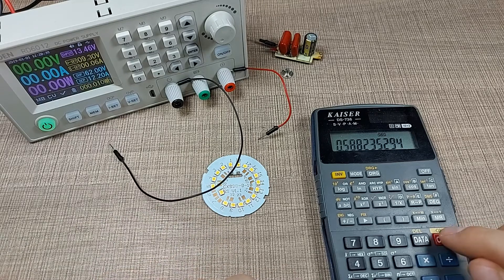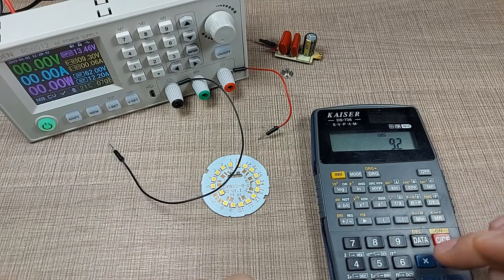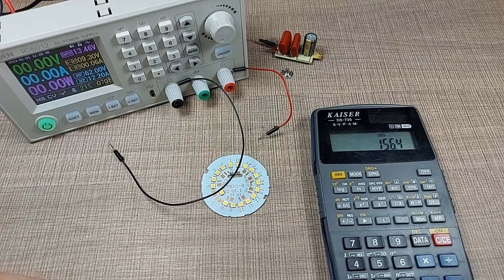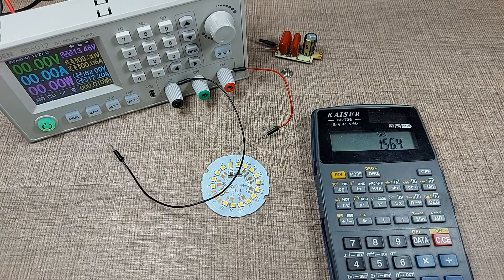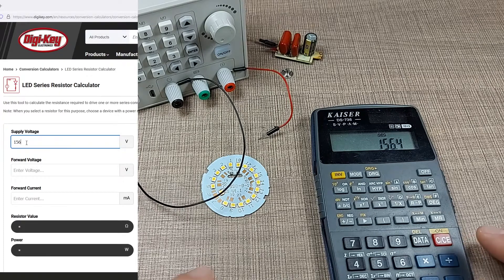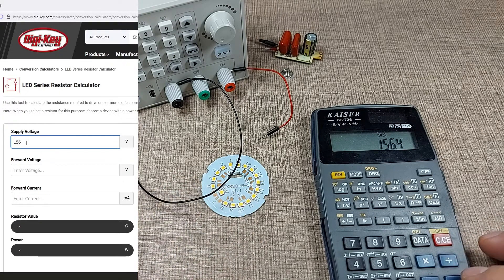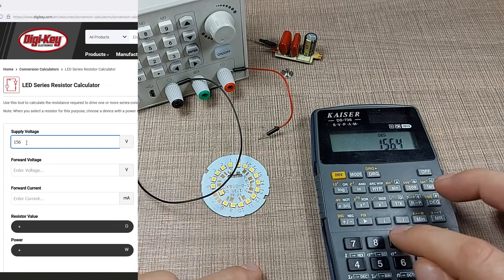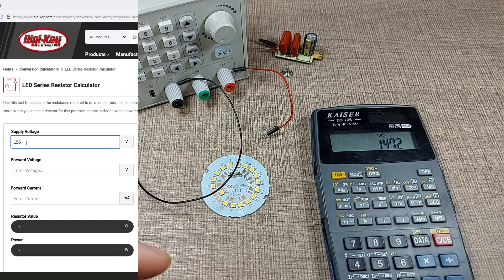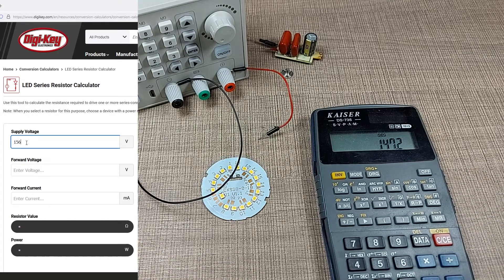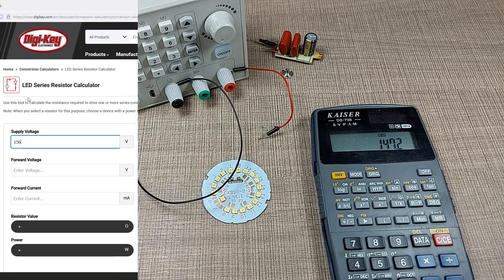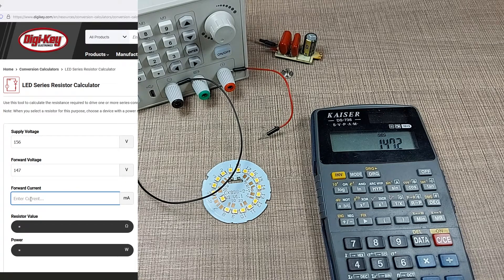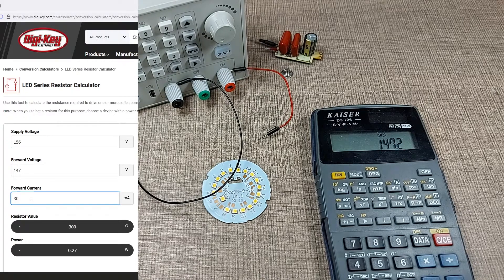We saw that we have 9.2 volts, and if we multiply that by 17 we get a total of 156.4 volts, and I'll use that as a supply voltage on this online calculator. Because now we have one LED that is not working, we need to deduct the voltage that would be across that LED, so that would be minus 9.2 volts, and we come to a value of approximately 147 volts that we will now have across the LEDs. We need to drop those 9 volts across the resistor.